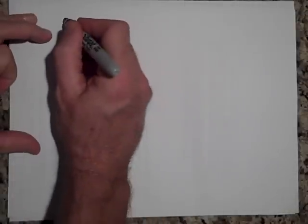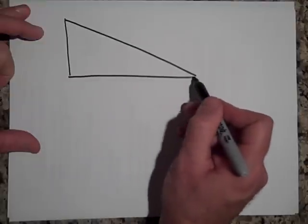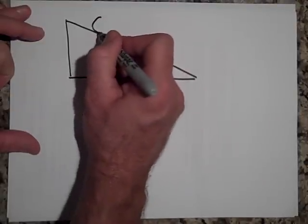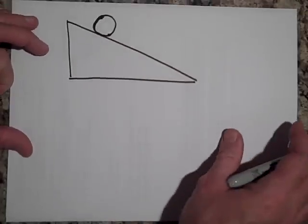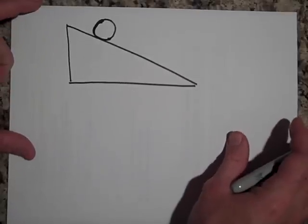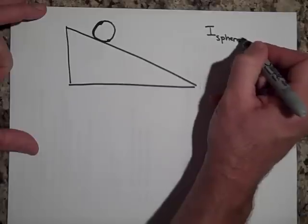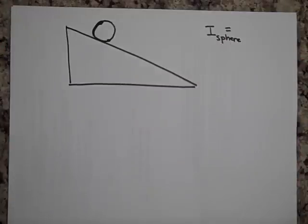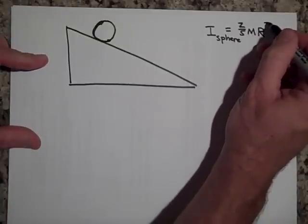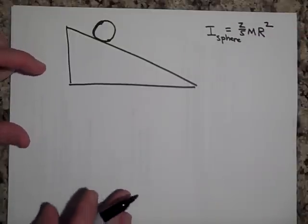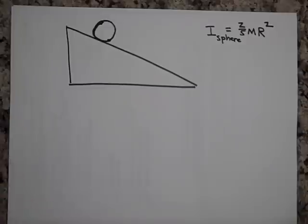If we have an incline plane, like so, and there's a ball. Let's say it's a sphere. So I for a sphere. If you go ahead and look at your table, you'll see that it's two fifths MR squared. If it's solid, a solid sphere is two fifths MR squared. That's what I is. Again, we will be calculating these shortly.